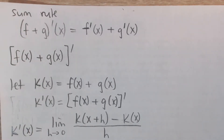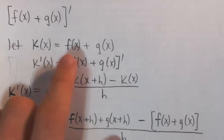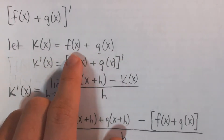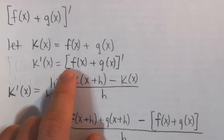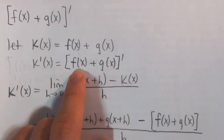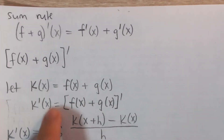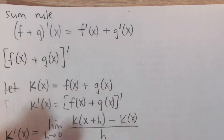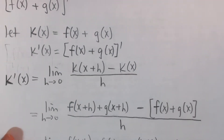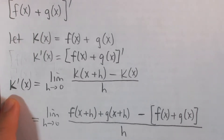The way I'm going to do it is: first, I'll let k of x be a new function equal to the sum of f and g, just to make things a little simpler. So when I take the derivative of k of x, I'm taking the derivative of the sum of two functions.